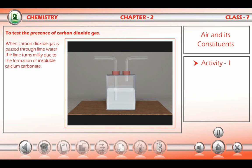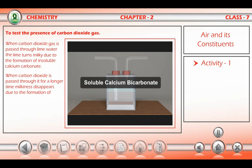The equation is Ca(OH)₂ + CO₂ → CaCO₃ + H₂O. When carbon dioxide is passed through it for a longer time, milkiness disappears due to the formation of soluble calcium bicarbonate.